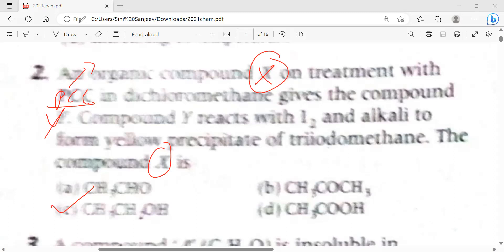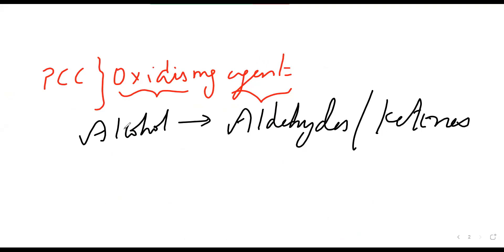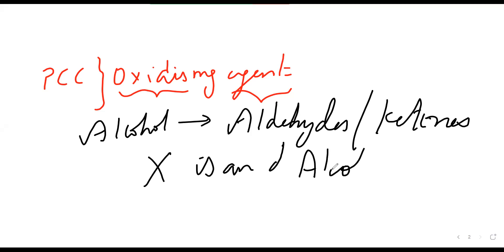PCC is a strong oxidizing agent. If it is an oxidizing agent, it converts alcohol to aldehyde or ketone. So X is an alcohol here. That's all.